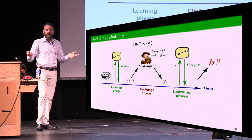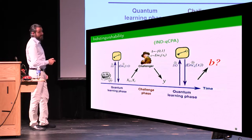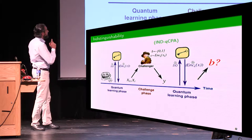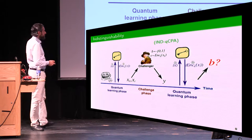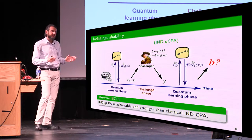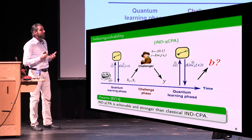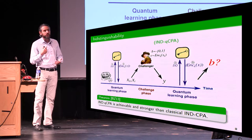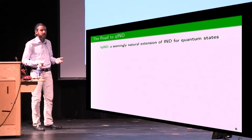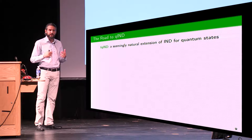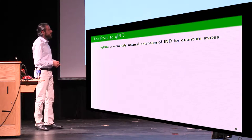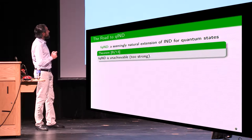What Boneh and Zhandry did with their almost classical security notion is extend the security notion to a quantum adversary where the learning phase is now quantum, but the challenge phase is still classical. They show this notion is achievable and strictly stronger than the classical one. You might wonder why you can't just do a quantum challenge phase as well. What happens is that if you try to do this in the more natural way, you obtain a notion which is unachievable, because there is an attack completely independent of the encryption scheme that always allows the adversary to distinguish encryptions of different superpositions.